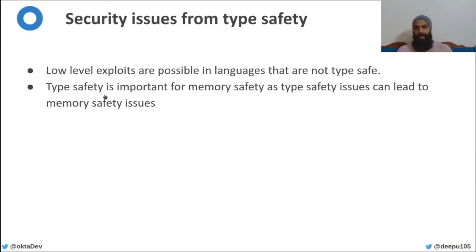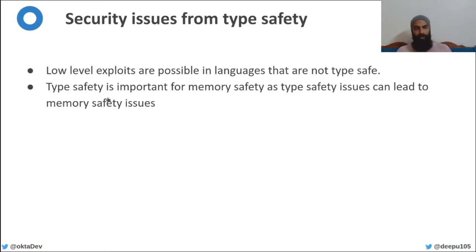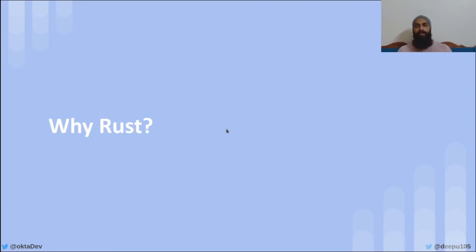Finally, there is type safety. Type safety issues are not as common as the others in type safe languages, but they can also lead to security issues. Type safety is extremely important for memory safety — if you work with weakly typed languages it is possible to create memory safety issues out of type safety issues, so it is still an important concern.